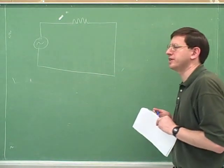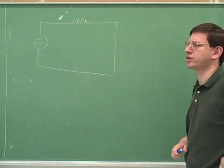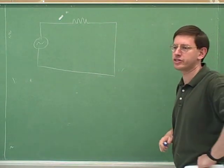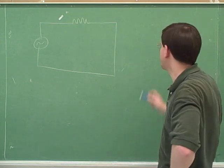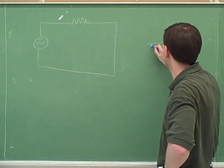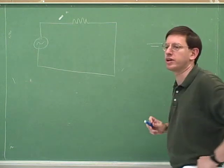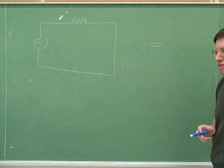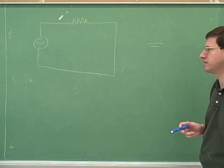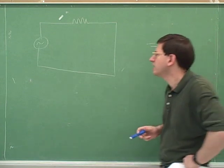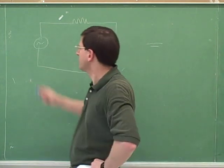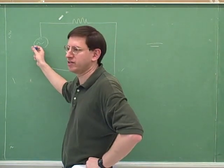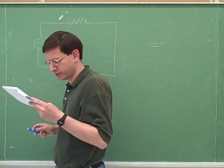We already know what the symbol is for a direct current power source — two uneven lines. We've just been thinking of that as a DC battery. Here's the symbol for an alternating current power source.